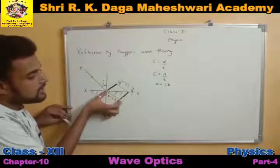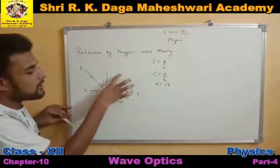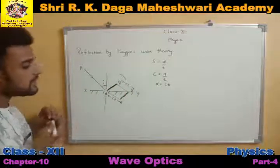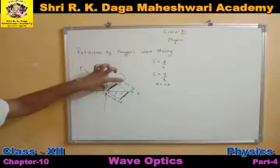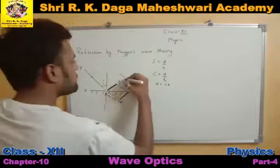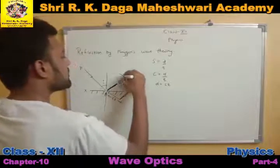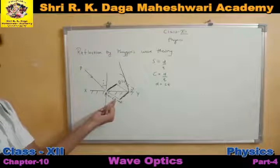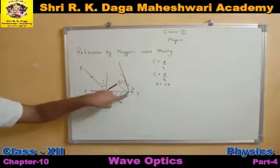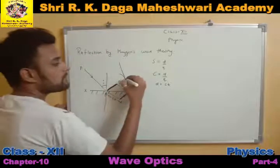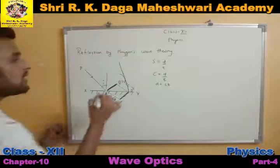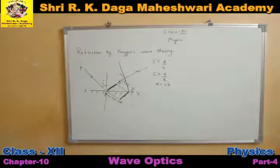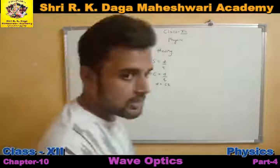Now, taking AA' as radius and A as center, I draw an arc. When I draw a tangent from B' onto this arc, the point at which this tangent cuts the arc — if I join that point to A — then this will be the reflected ray. So we can say that AQ will be our reflected ray.